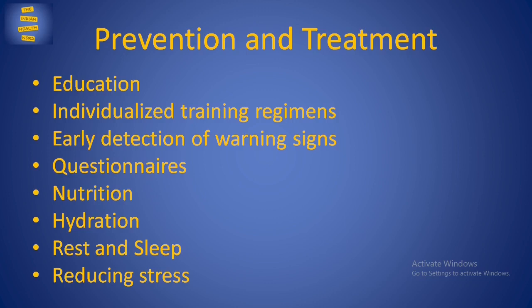Nutrition: For the repair and regeneration of muscle, adequate macronutrients like carbohydrates, proteins and fats, and micronutrients like vitamins and minerals are required. Thus, proper nutrition plays an important role in recovery. Inadequate nutrition can delay the recovery process, and this effect can pile up over a period, eventually leading to the development of overtraining syndrome.